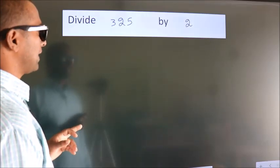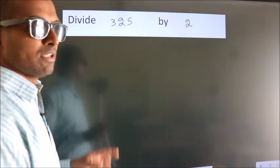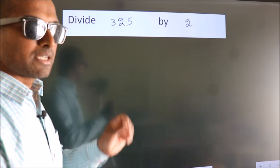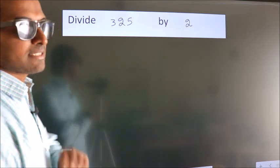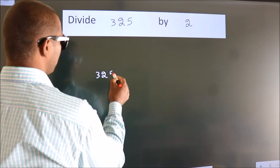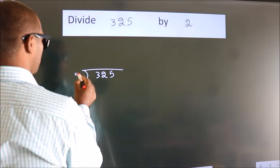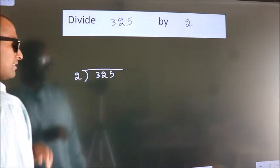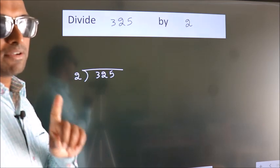Divide 325 by 2. To do this division, we should frame it in this way. 325 here, 2 here. This is your step 1.